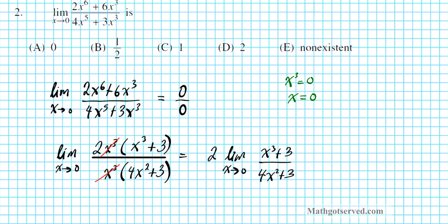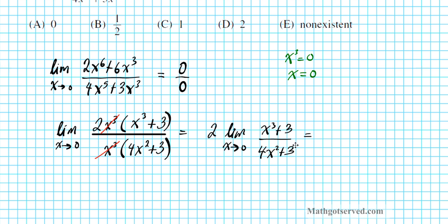Now, we can evaluate by direct substitution without running into any complications. So we're going to have 2 times, plugging 0 here and here, you have 0 over 0. So, we're going to end up with, 0. Let me just show you the steps plus 3 over 0 plus 3.